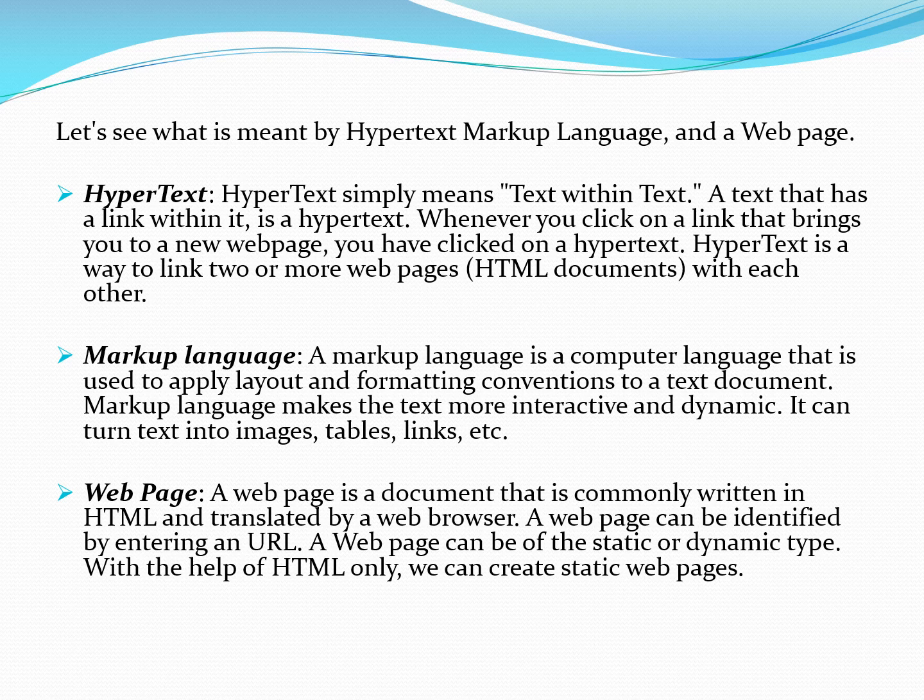This is the meaning of hypertext — it is about linking multiple pages together, multiple HTML documents together. That is why it is called hypertext, because you are linking a lot of pages together. It is called a markup language because it is used to apply layout and formatting to make it beautiful — you put the proper layout, add images, tables, and links to make it attractive.